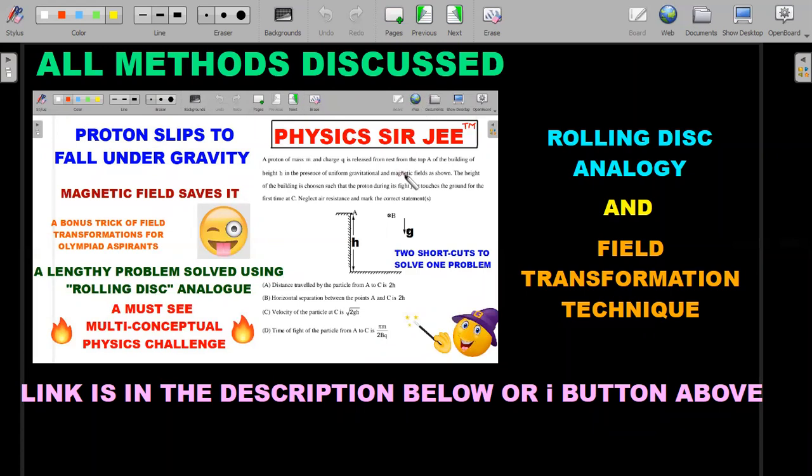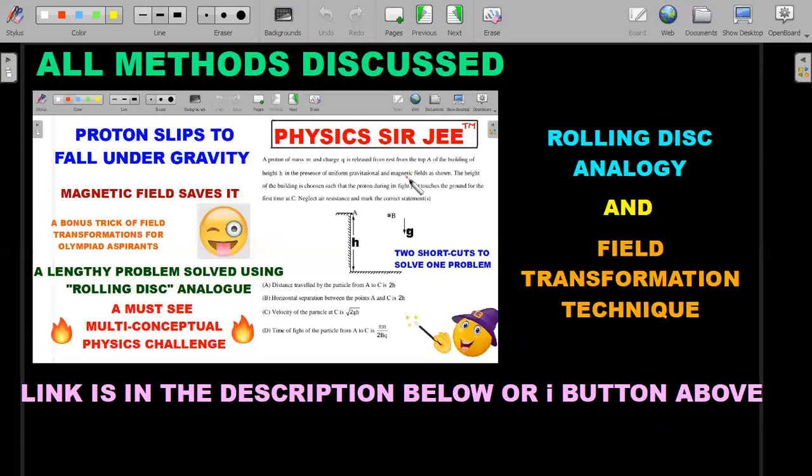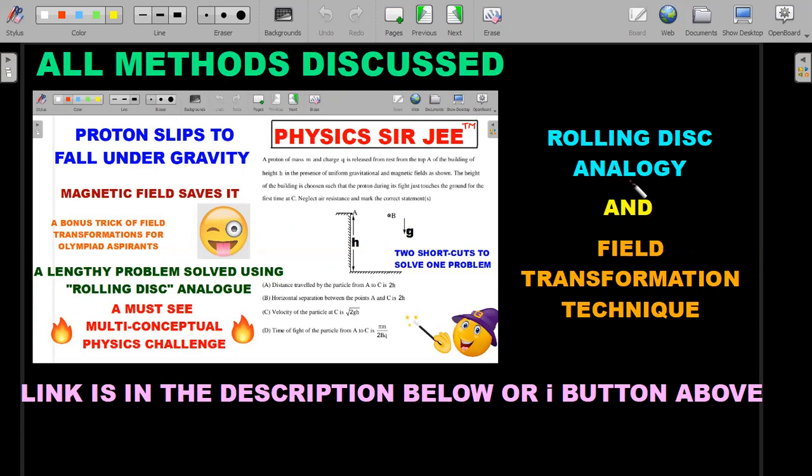It's a very nice problem with four multiple choice options. The particle was moving in a magnetic and gravitational field. I discussed the usual Cartesian coordinate system method and then the rolling disk analogy to ensure the problem gets solved quicker.